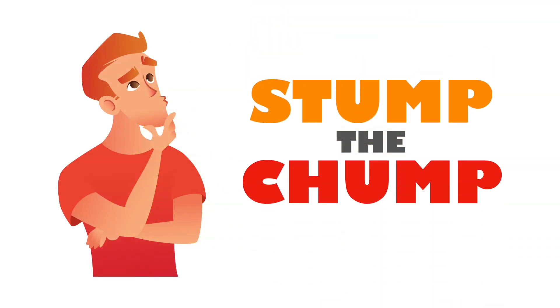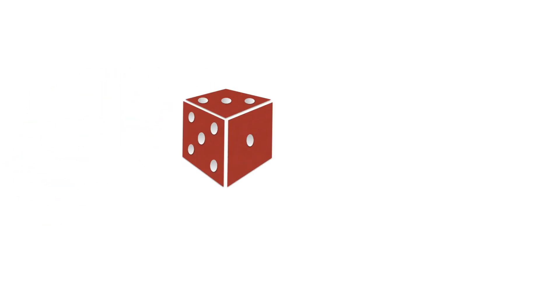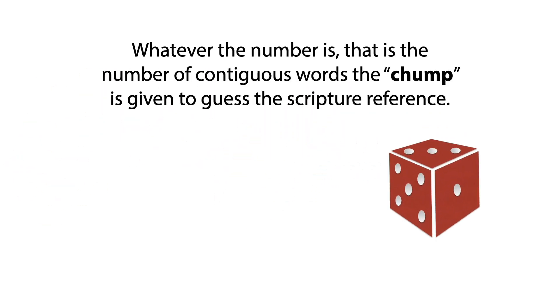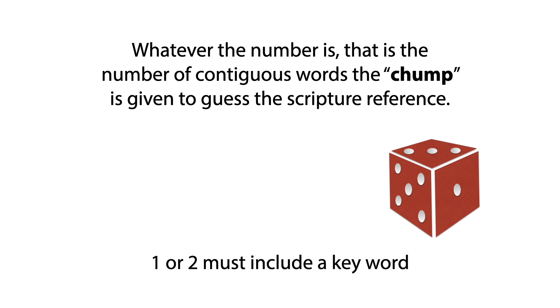Stump the Chump. In Stump the Chump, you can use the contiguous cards you made in the first game. This time, though, you roll a die. Whatever the number is, that is the number of contiguous words the chump is given to guess the scripture reference. If it lands on a one or a two, it must include a key word.